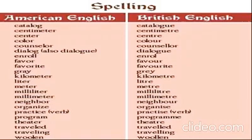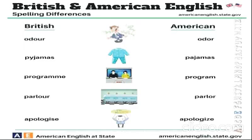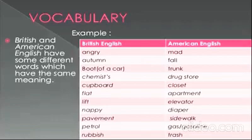Here are some words that differ in spelling between American and British English. You can go through the words yourself — you will find that American English is almost like the way we pronounce the word, rather than British English. For example: British 'odour' (O-D-O-U-R), American 'odor' (O-D-O-R). British 'pyjamas' (P-Y-J-A-M-A-S), American 'pajamas' (P-A-J-A-M-A-S). British 'programme' (P-R-O-G-R-A-M-M-E), American 'program' (P-R-O-G-R-A-M). British 'parlour' (P-A-R-L-O-U-R), American 'parlor' (P-A-R-L-O-R). British 'apologise', American 'apologize'.